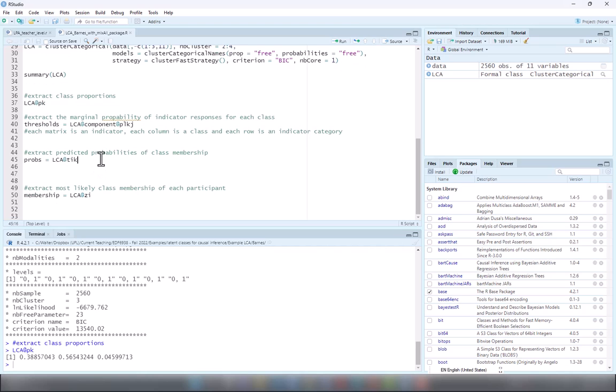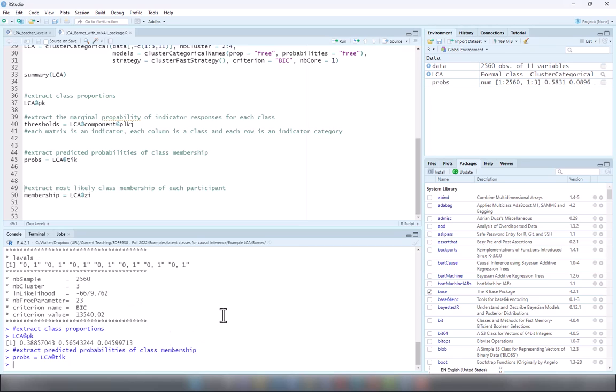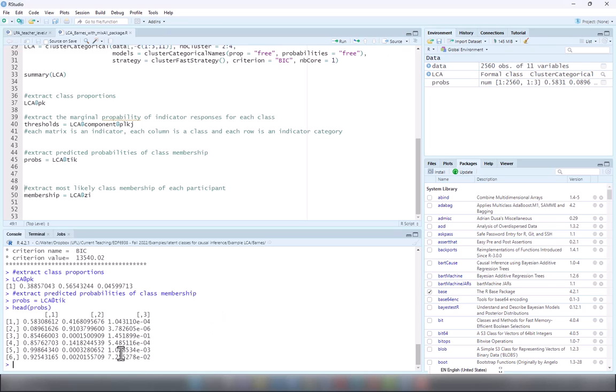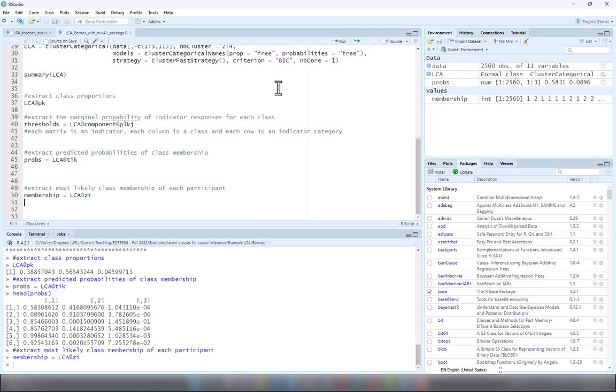Then I can extract the posterior probabilities of class membership which I can take a look at here. Each school has a set of posterior probabilities of class membership which sum up to one.